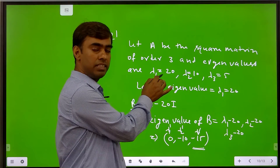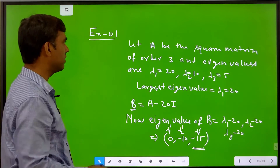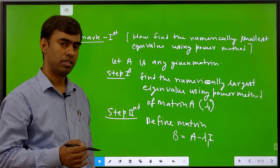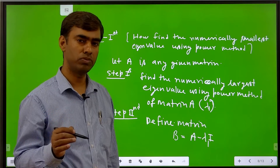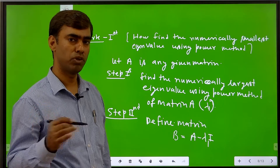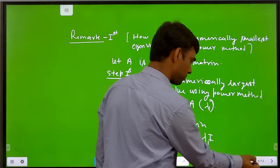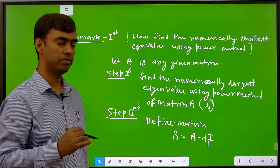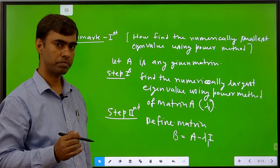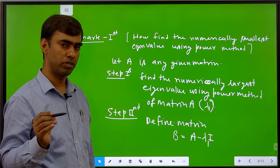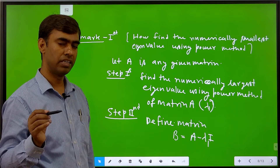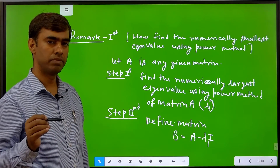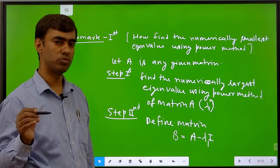Initially we assumed the numerically largest eigenvalue is 20 and the numerically smallest eigenvalue is 5. In this way, we are able to find the numerically smallest eigenvalue using the concept of the numerically largest eigenvalue. With the power method, we can find not only the numerically largest value but also the numerically smallest value using this procedure: find the largest eigenvalue of A, define B = A minus lambda 1·I, find the numerically largest eigenvalue of B, and the numerically smallest eigenvalue equals the largest of A plus the largest of B.